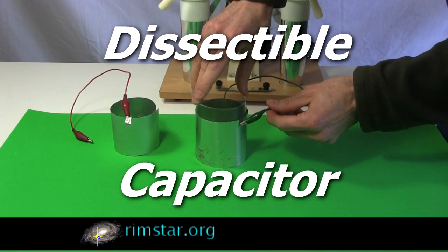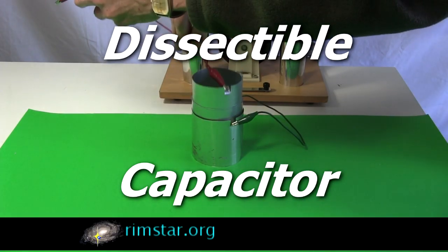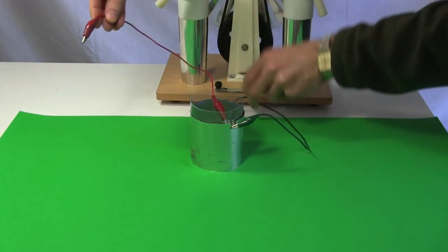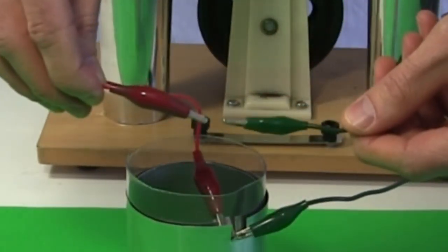Hi folks! Here's a neat thing you can do with a dissectable capacitor, or a dissectable Leiden jar in this case. Leiden jar is just what the first discovered capacitor was called.